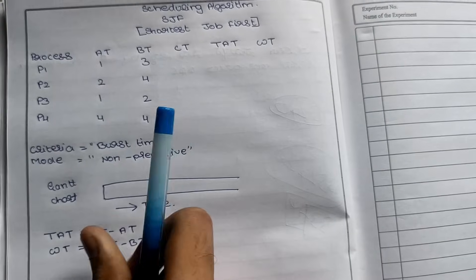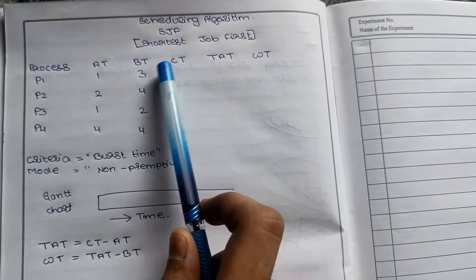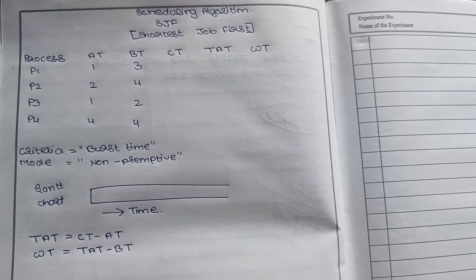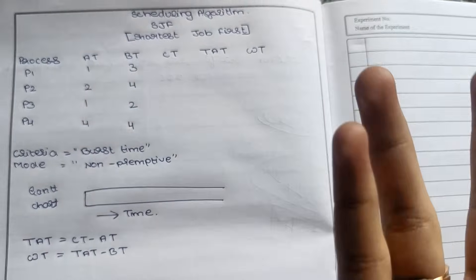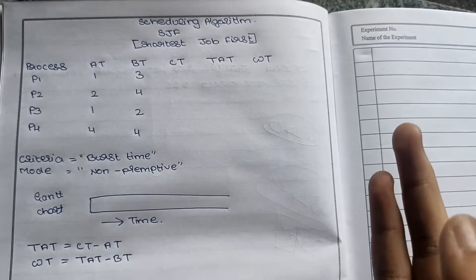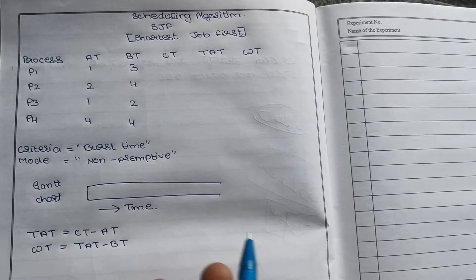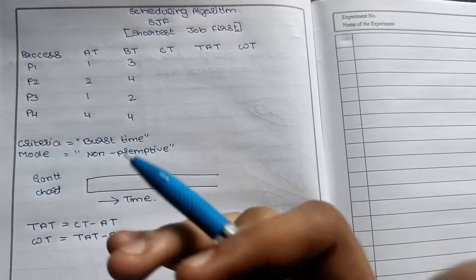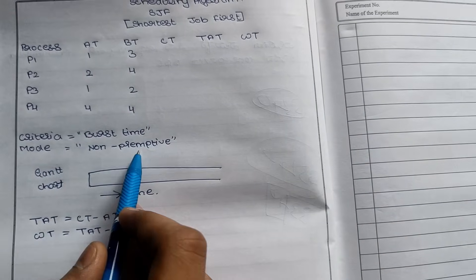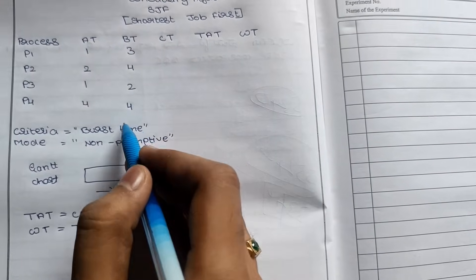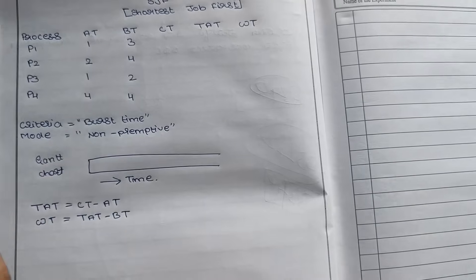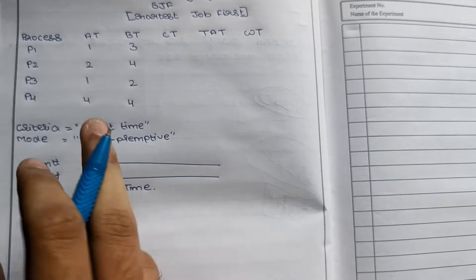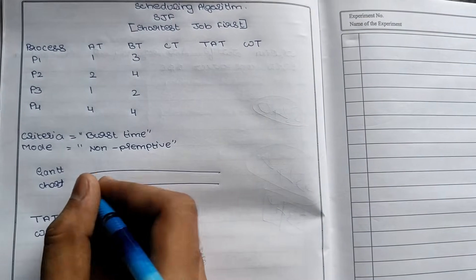Now let me show another example with the Gantt chart. Next we will see the scheduling algorithm Shortest Job First. This is the second method for the ready queue to running queue. The criteria is burst time, not arrival time. The process with the shortest burst time gets assigned first. The mode is non-preemptive. Burst time is the most important factor. As usual, turnaround time equals completion time minus arrival time, and waiting time uses the same formulas.